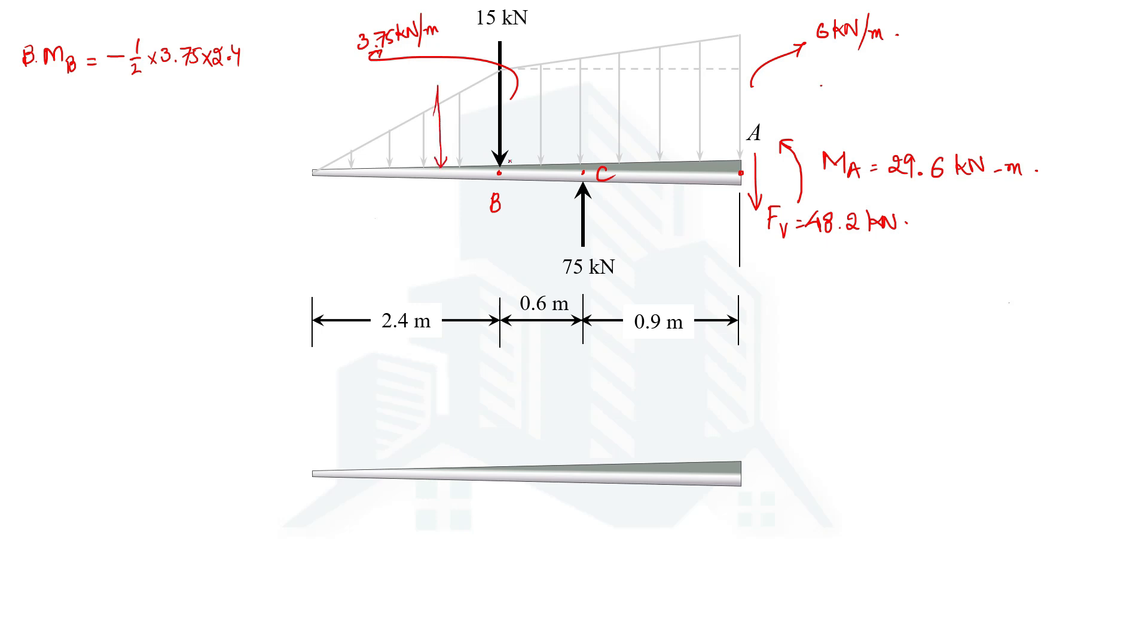This will be the intensity of the load and this will act at a distance of 1/3 from the maximum intensity side, so this will be 1/3, which means around 0.8 meters. The momentum will be 0.8 meters, so simply multiply 0.8.